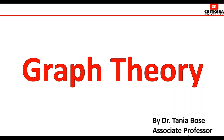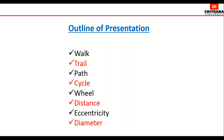Yesterday we covered what graphs are all about, the different types of graphs, the order and size of a graph, and the degree of a vertex — both in undirected and directed graphs. Today's lecture will cover walk, trail, path, cycle, wheel graphs, and how to determine distance, eccentricity, and diameter of a graph.